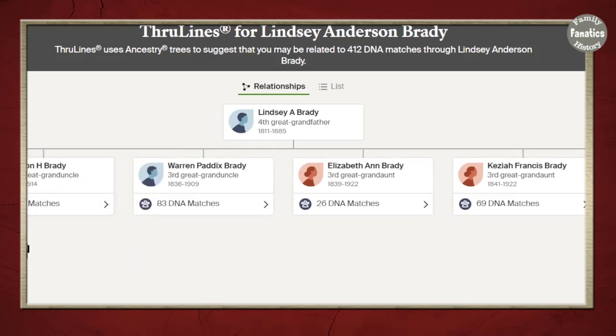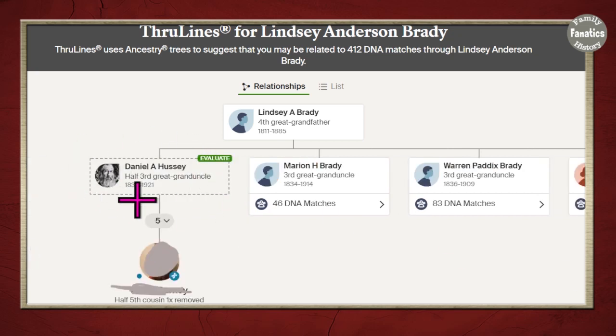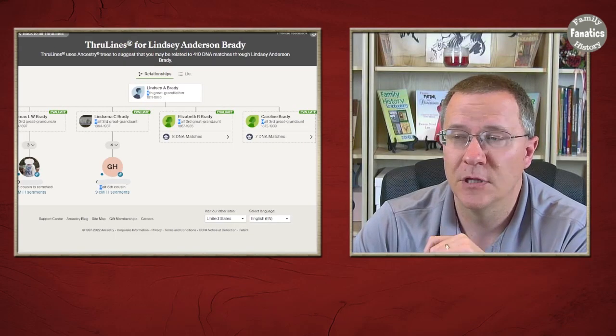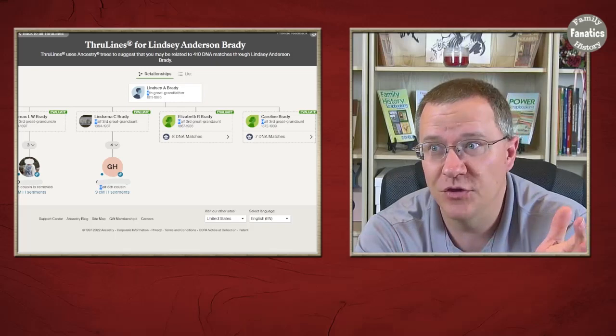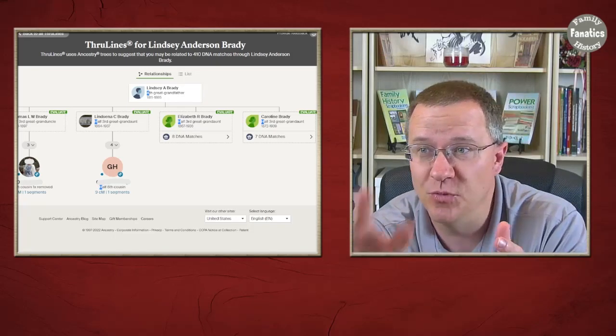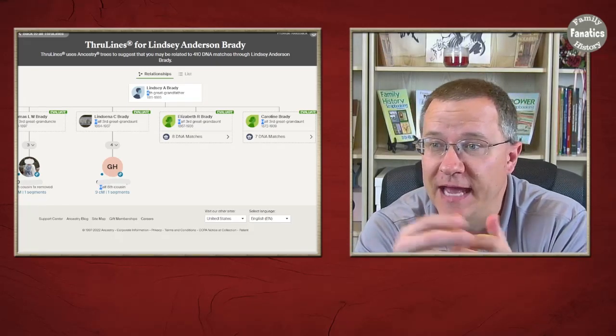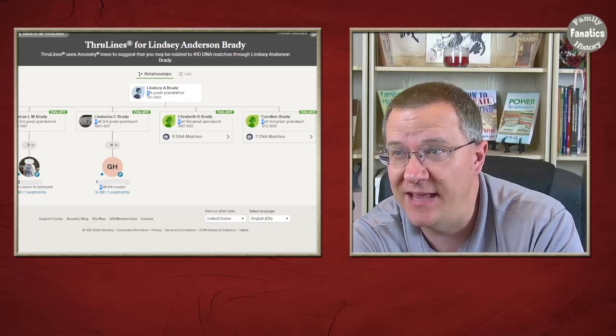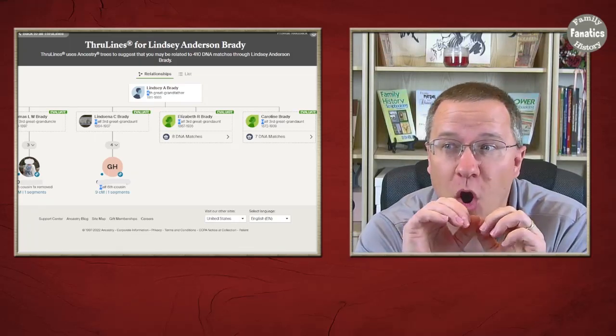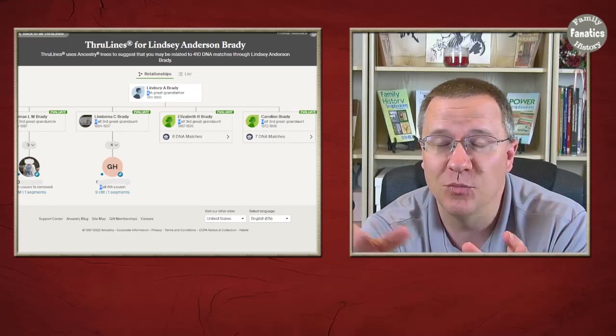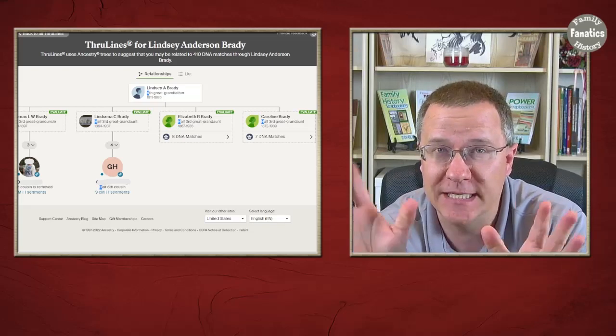Marion I got 44 and then through Daniel here I have one. Now if you'll notice Daniel is a half third great grand uncle, so he would be from one of the other wives of Lindsey Brady. And if I scroll back to the other side I can see even more, and there's some more from these half that have just one as well as some that have eight and seven.